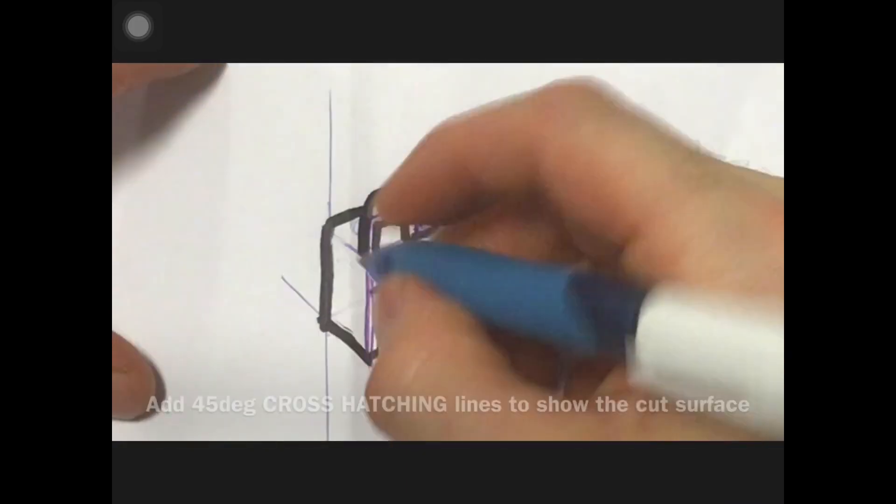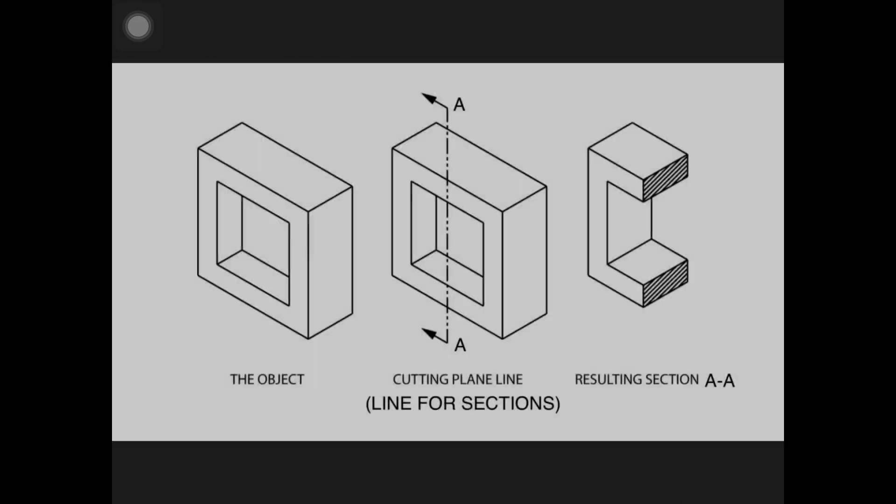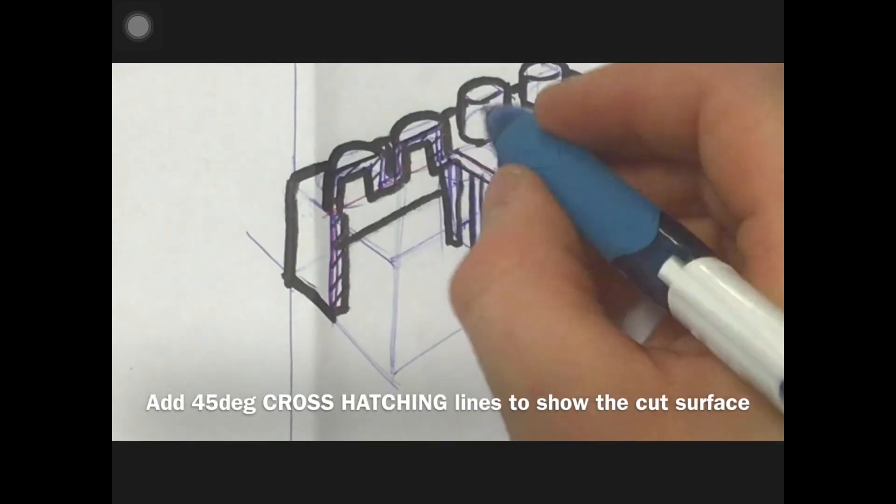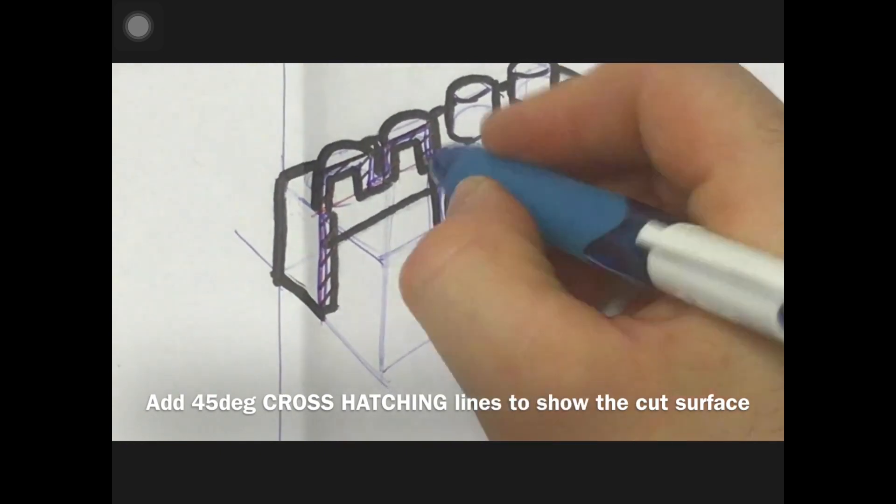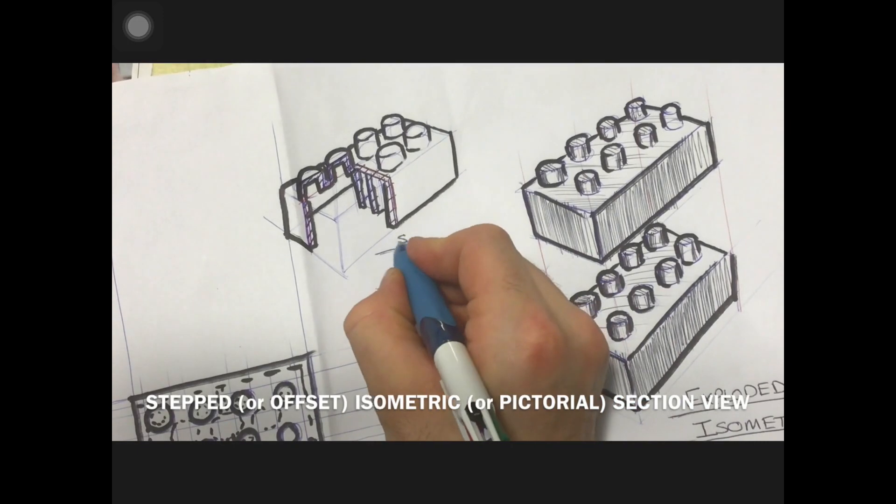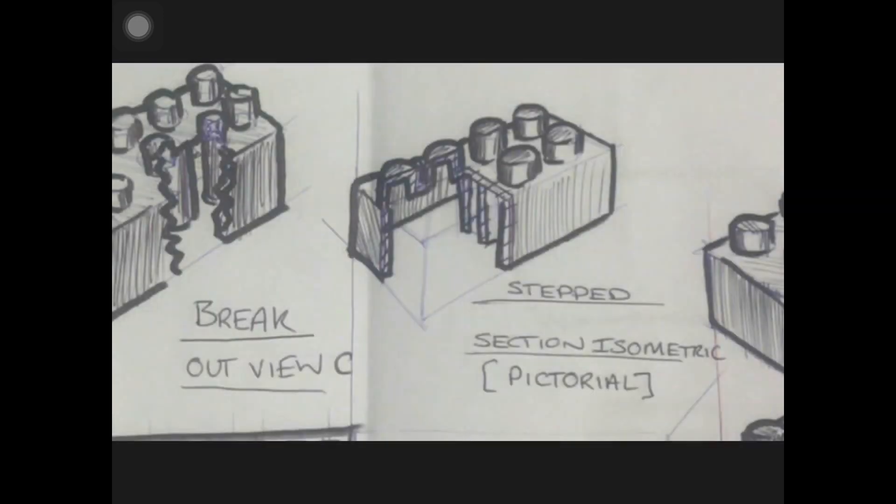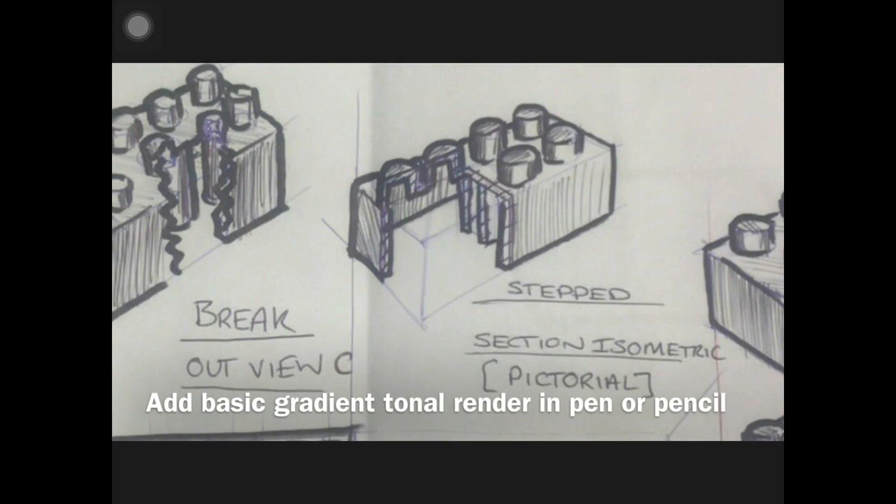Now just adding in the 45 degree cross-hatching lines for showing which surfaces have been cut through. This view in block capitals as a step section isometric or step section pictorial view, and then adding a basic render as before.